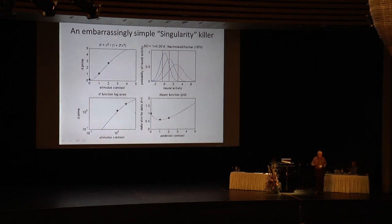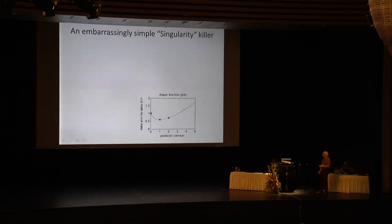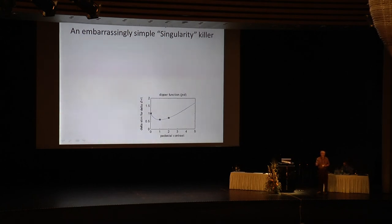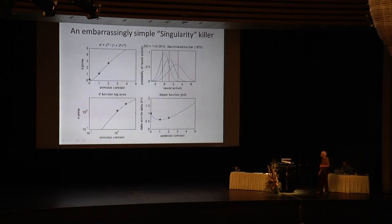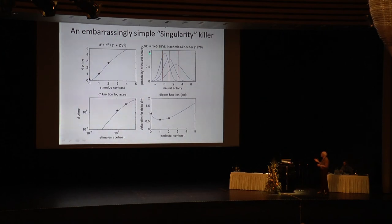Every time anybody does any experiment, give multiple ratings. You have to convert it to one AFC, not two AFC. You can do it with three stimuli. Read the 1970 Nachmias and Kocher paper — it has three stimuli, one, two, three — and I think three is better. With four buttons, there are three criteria, and from that you get the ROC curve.